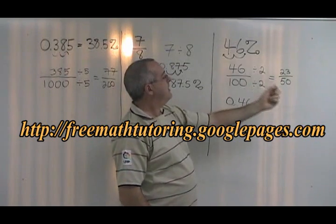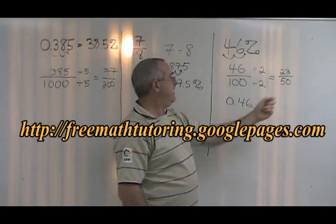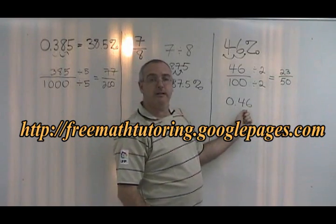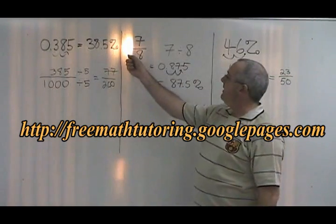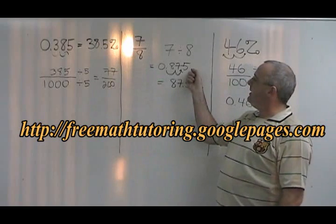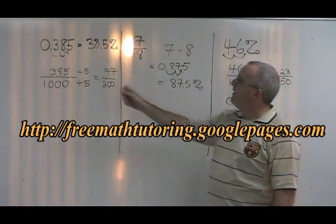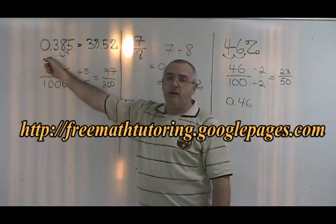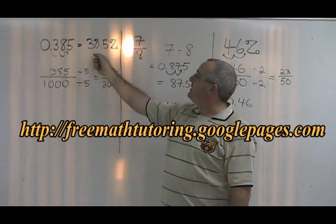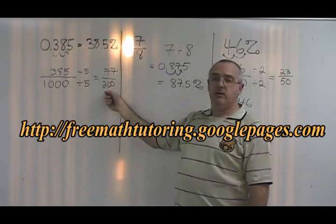46% is equal to 23 over 50, which is equal to 0.46. 7 eighths is equal to 0.875, which is equal to 87.5%. 0.385 is equal to 38.5%, which is equal to 77 over 200.